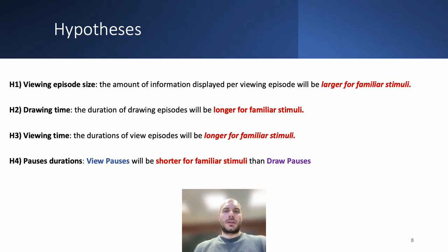The TIPS design has been tested over four main hypotheses. The first three hypotheses aim to test the participant's chunk size over the stimuli, with each chunk in measure reflecting a bigger chunk size for familiar stimuli. With our fourth hypothesis, we aim to test the different duration of the view pause and the draw pause on familiar stimuli, with the view pause being shorter for familiar stimuli than the draw pause.